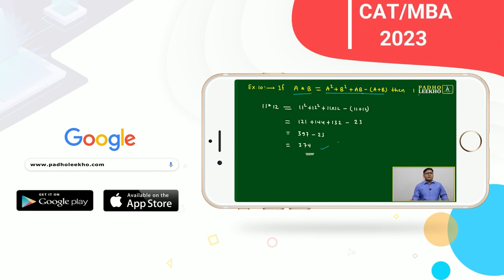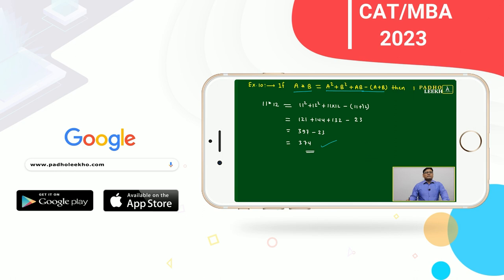Just we have to do simple mathematics. You will get 374. No need to put much effort, but this relation can be given much more.